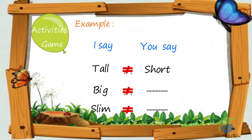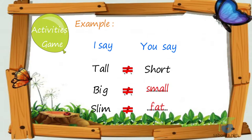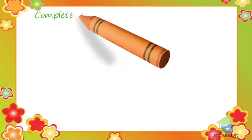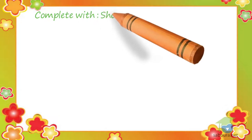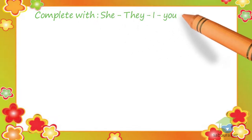The answer. Big is the opposite of small. Slim is the opposite of fat. Complete with: She, They, I, You, He, He.